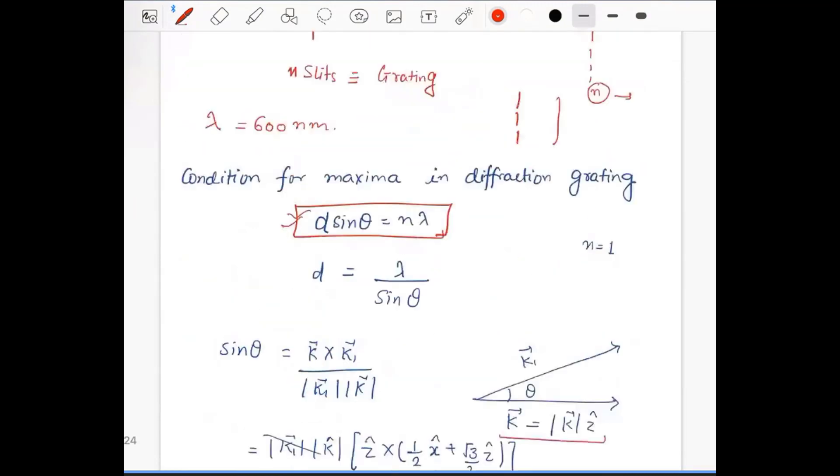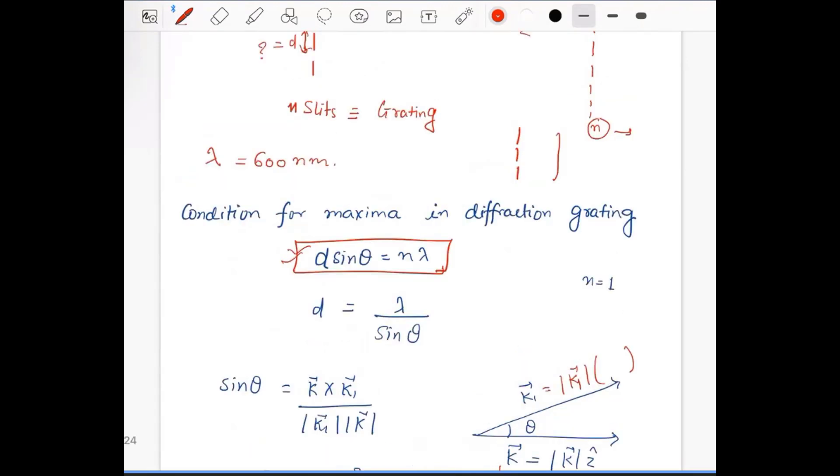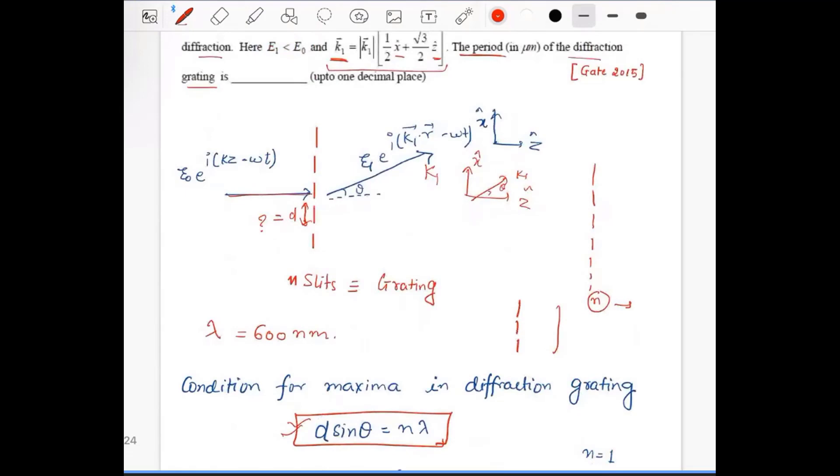You can say that your incident wave is k with magnitude k in the ẑ direction, and you have k1 with magnitude k1 along the direction which has both components x̂ and ẑ.